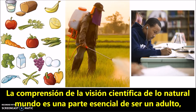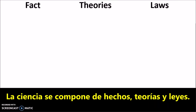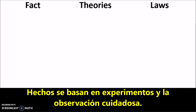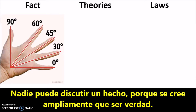Understanding the scientific view of the natural world is an essential part of being an adult, so you can make personal, societal, and ethical decisions. Science is made of facts, theories, and laws. Facts are based on experiments and careful observation. No one can argue a fact, because they are widely believed to be true.